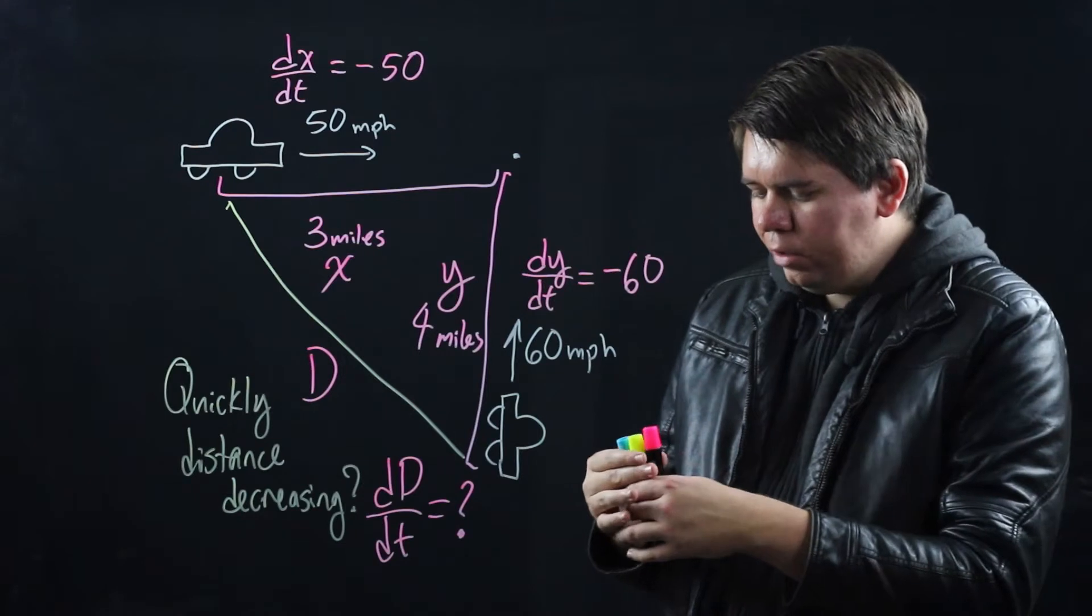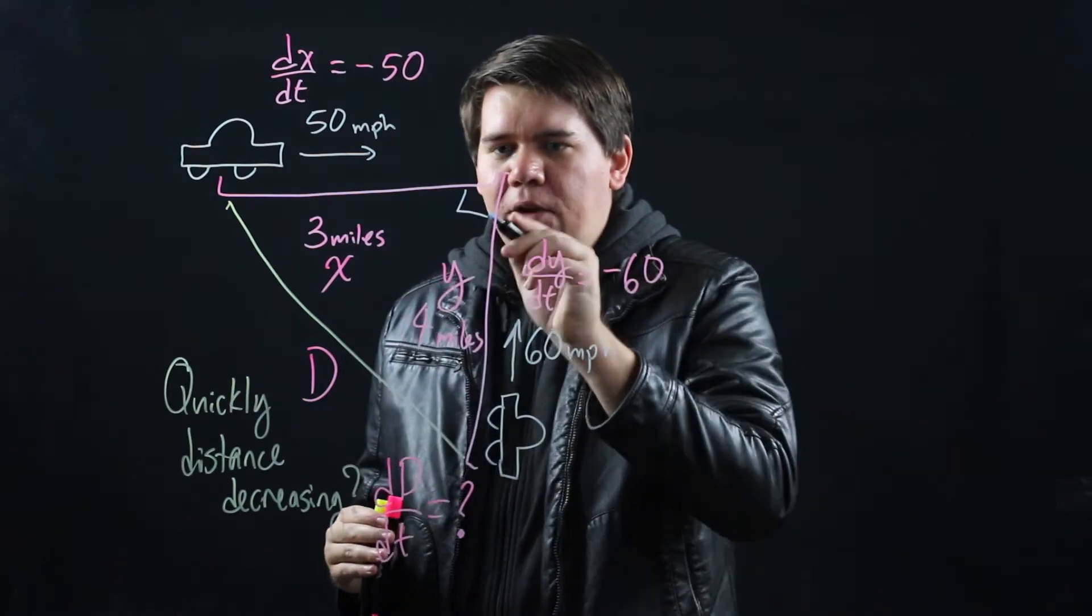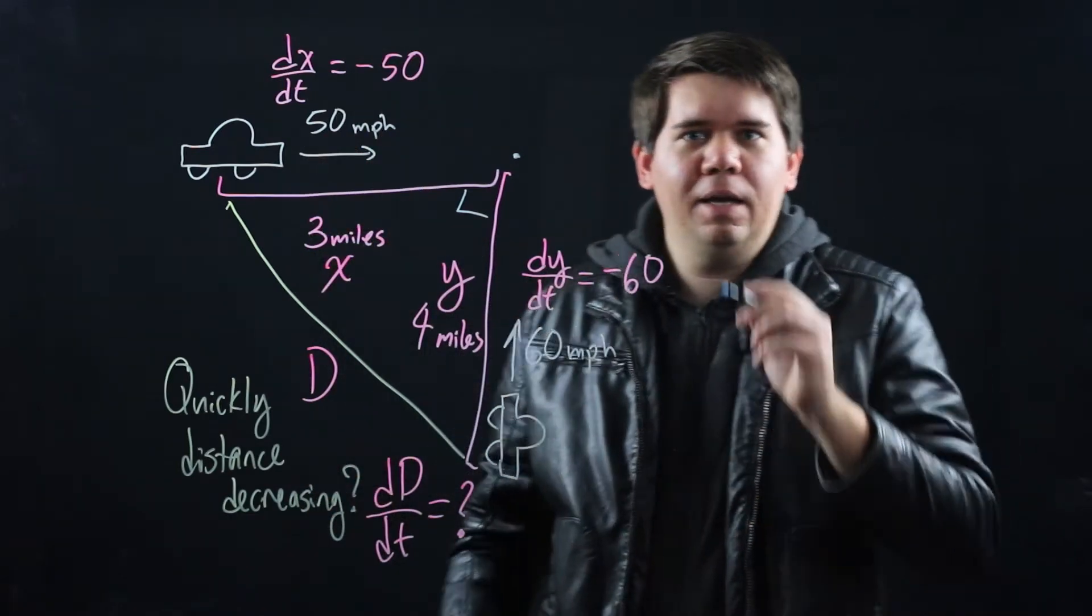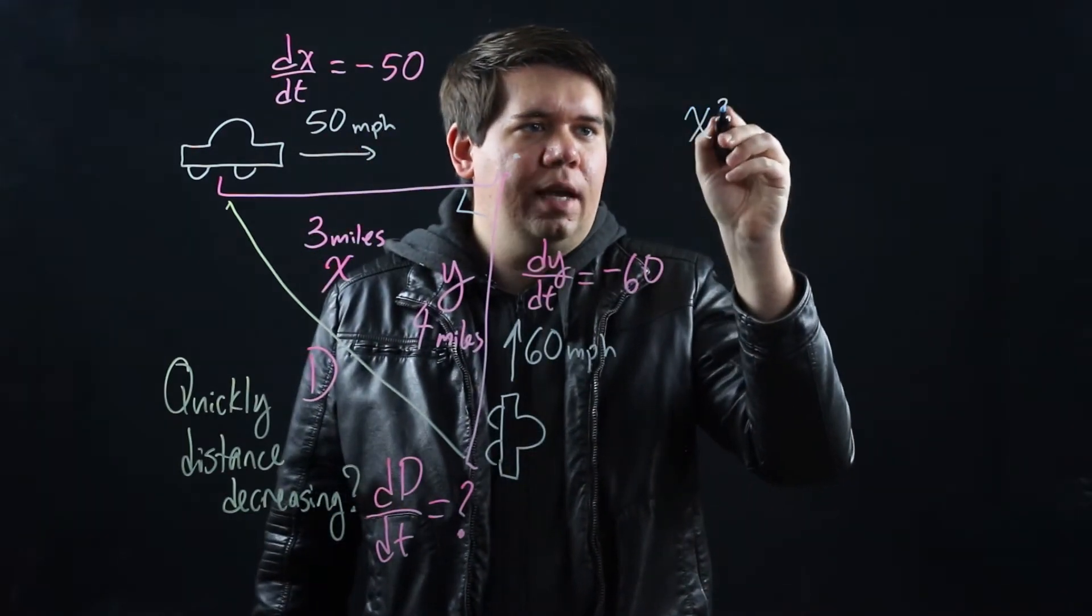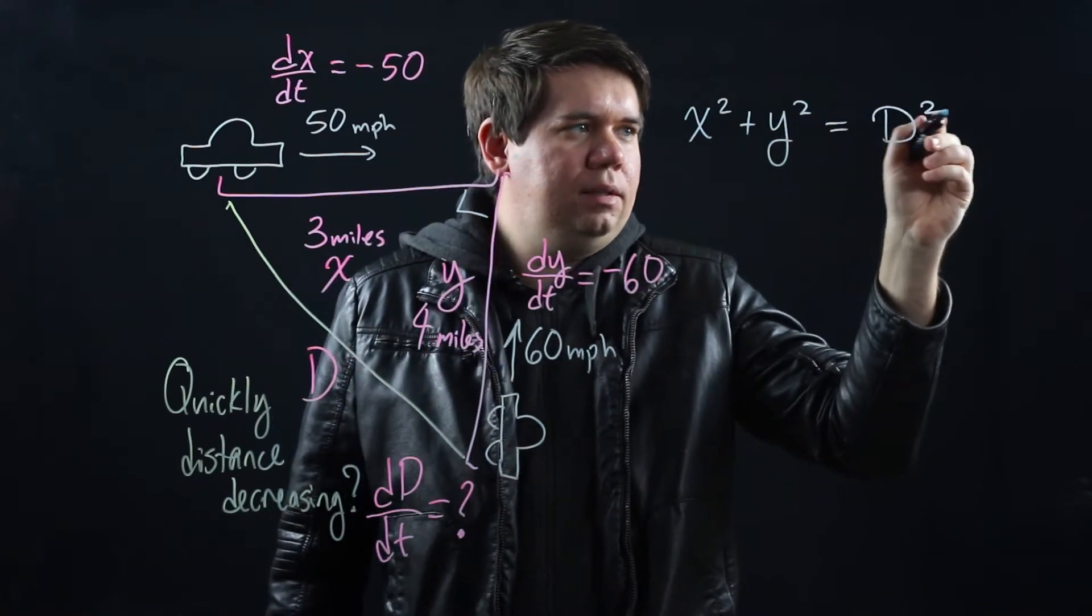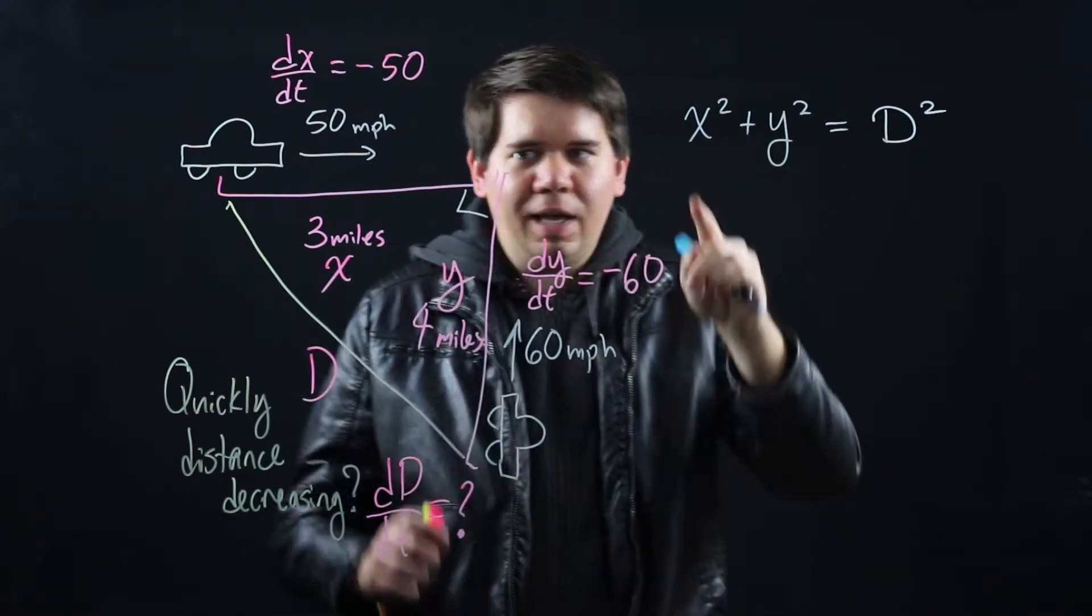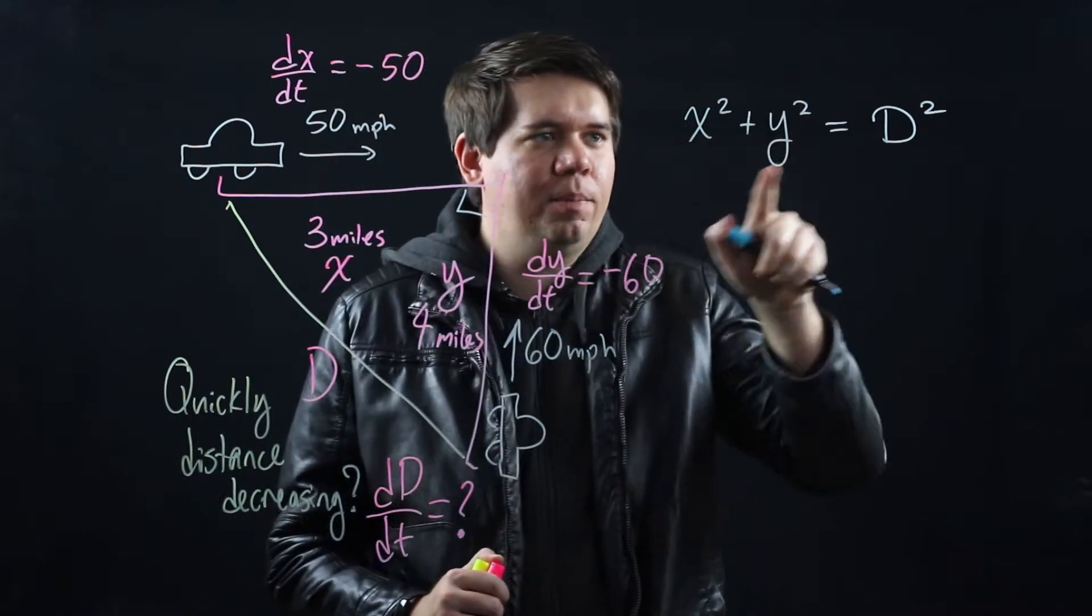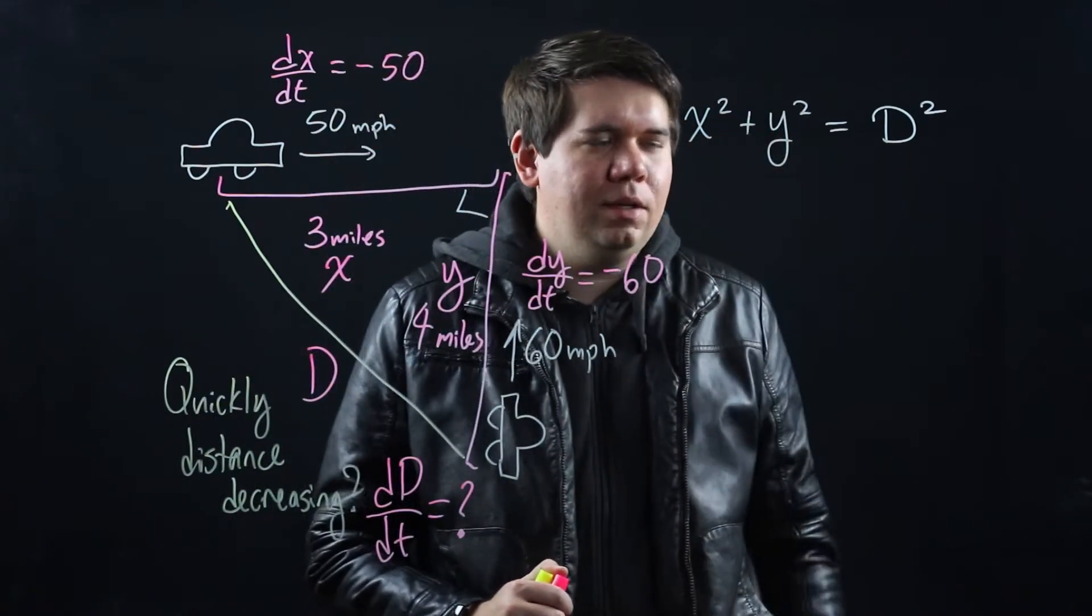Well maybe you've already noticed, if you just look here, you have a right triangle. And so we can relate d with x and y by the relationship x squared plus y squared is d squared. Now we've related the quantities that we want to know about. We have information about x and y, we want to learn something about d.